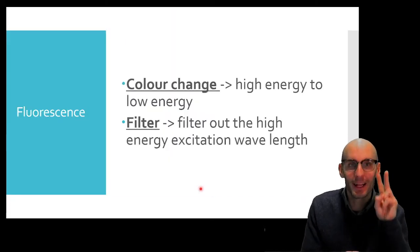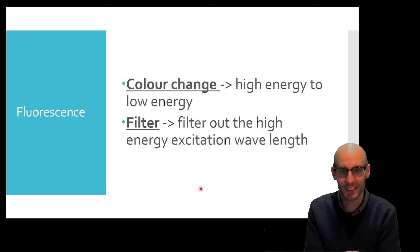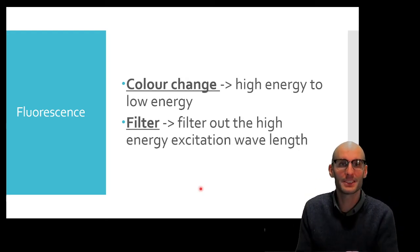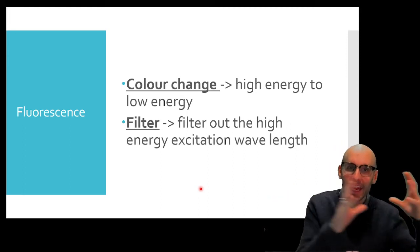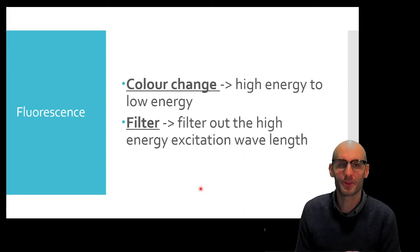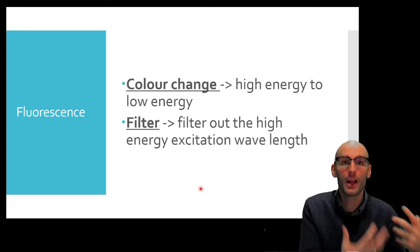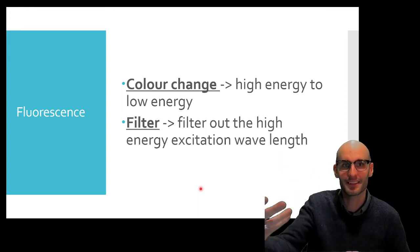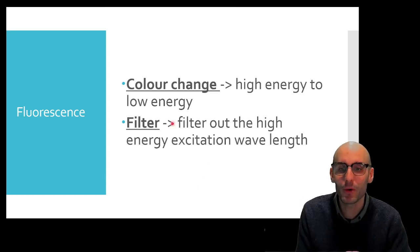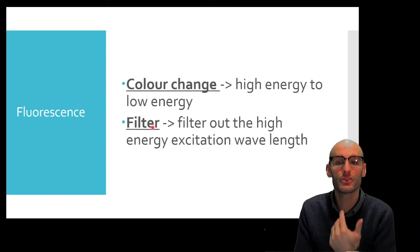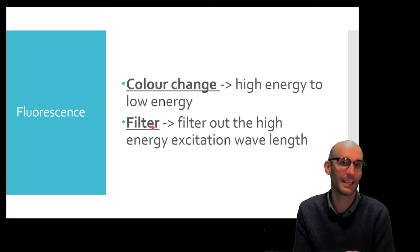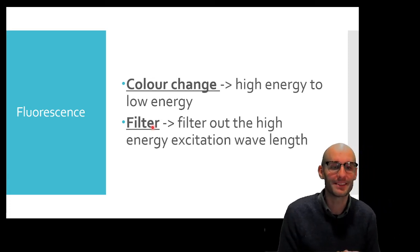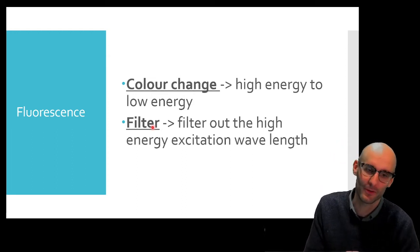So these are the two essential components of fluorescence. We need a color change from a high-energy, high-frequency excitation wavelength that changes after hitting the fluorescent substance to a lower-energy, lower-frequency emission wavelength — excitation and emission. And we also need to filter out the high-energy excitation wavelength, otherwise that signal is going to overwhelm what we see.